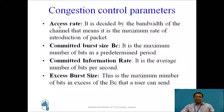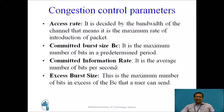The parameters for congestion control are: access rate, committed burst size (BC), committed information rate (CIR), and excess burst size (BE). When the access rate exceeds a particular value, congestion can be declared. If the burst size is greater than BC — the predefined maximum bits per second — then a congestion condition is detected. The excess burst size means that if the maximum number of bits per second exceeds BC, congestion may occur.